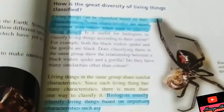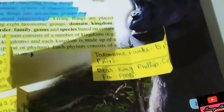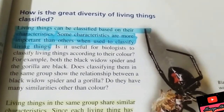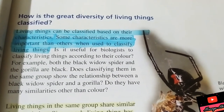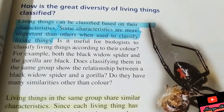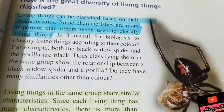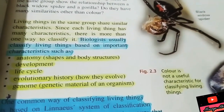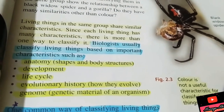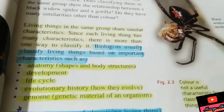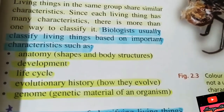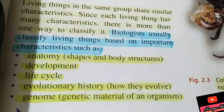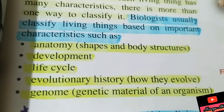At page 29, they ask: how is the great diversity of living things classified? Classified means grouped. Living things can be classified based on their characteristics. Some characteristics are more important than others. Biologists — who study living organisms — usually classify living things based on five criteria. These are: anatomy, development, life cycles, evolutionary history, and genome.